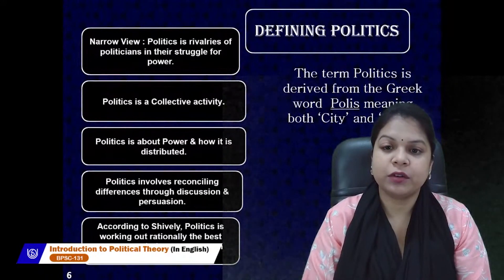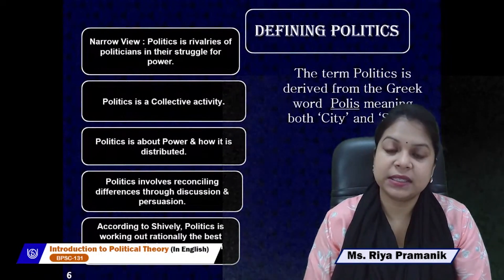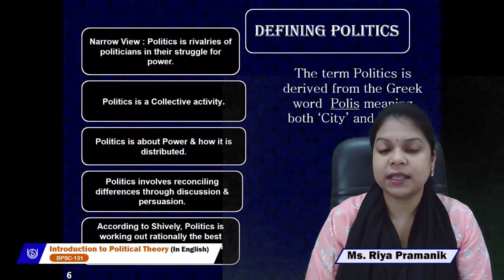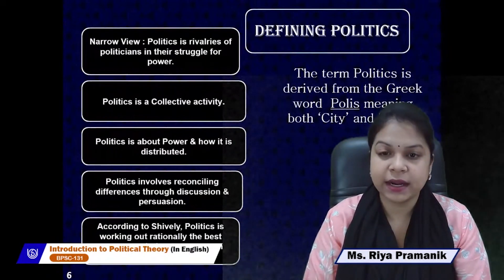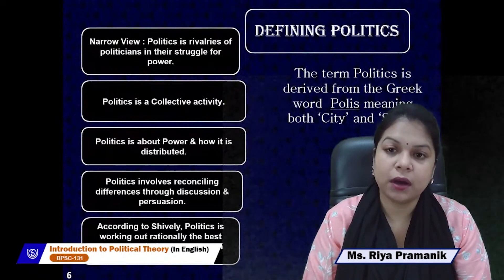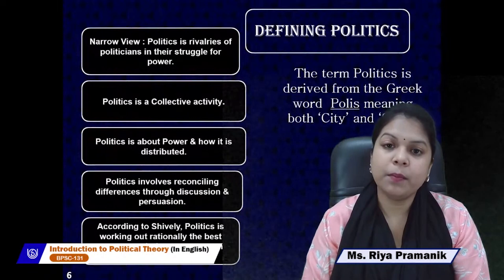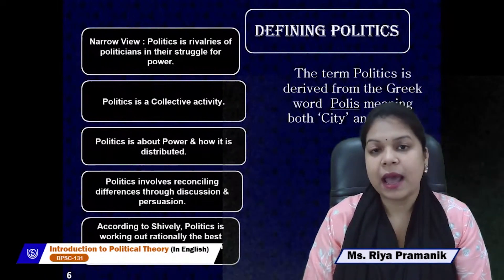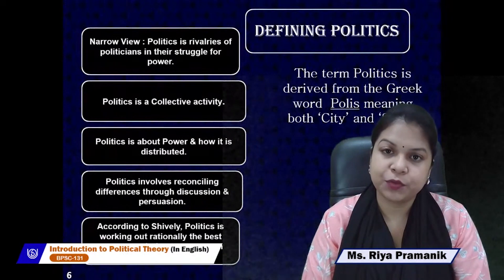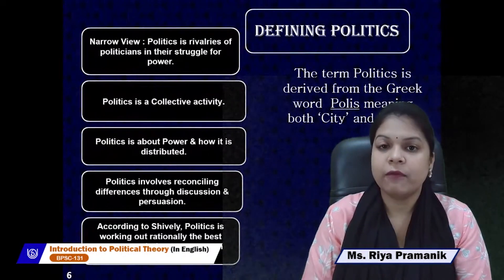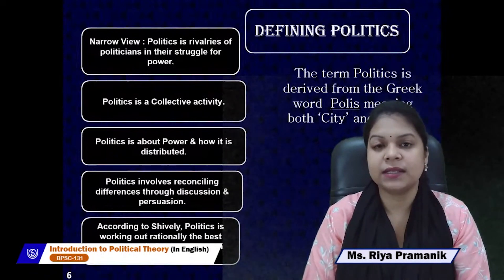The first lecture on this subject was on politics — what is politics and what is political theory? The term politics is derived from the Greek word 'polis', meaning both city and state. When we talk about politics, there are two kinds of views which emerged while defining this term: one is a narrow view and one is the broader sense.